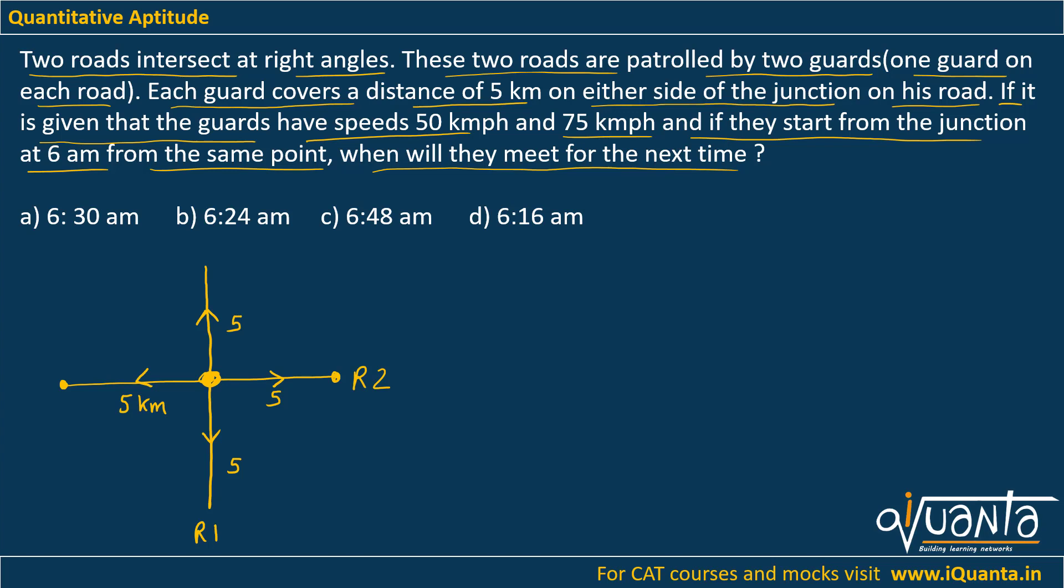Now, if they are going from this junction, what will be the distance that they will cover to reach this junction again? If we talk about guard one who is roaming on street one, road one, he will cover 10 km to come back to the junction.